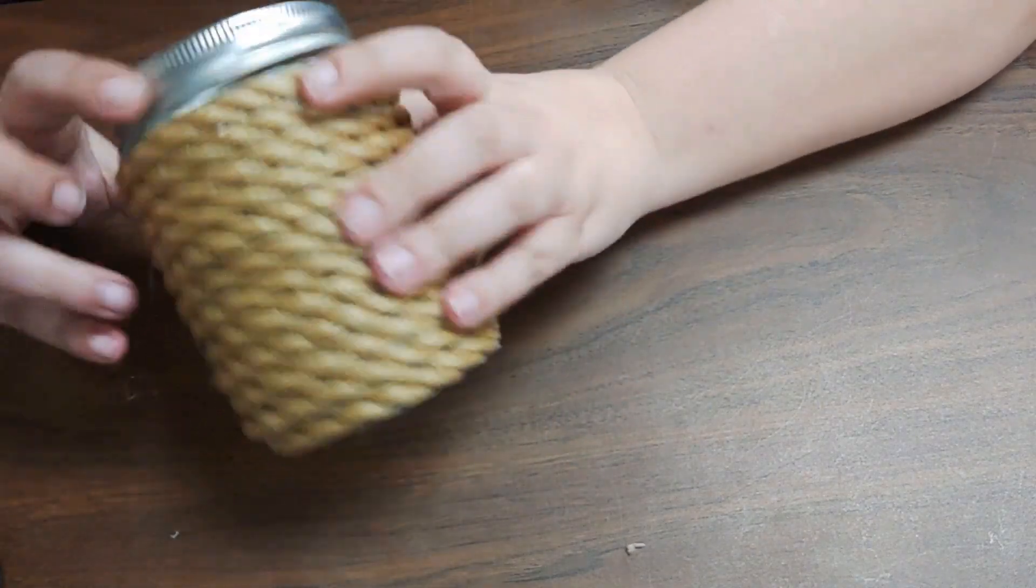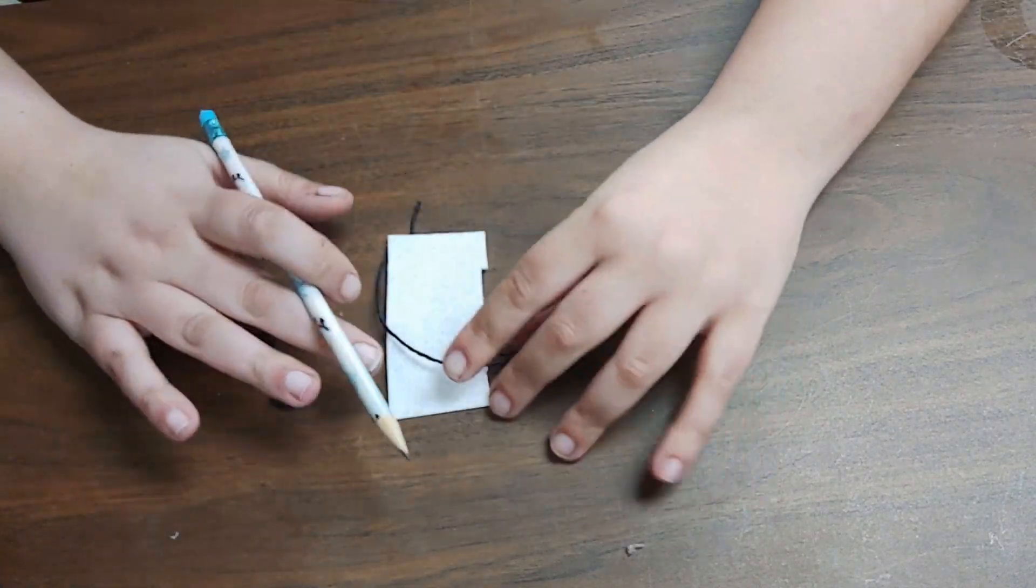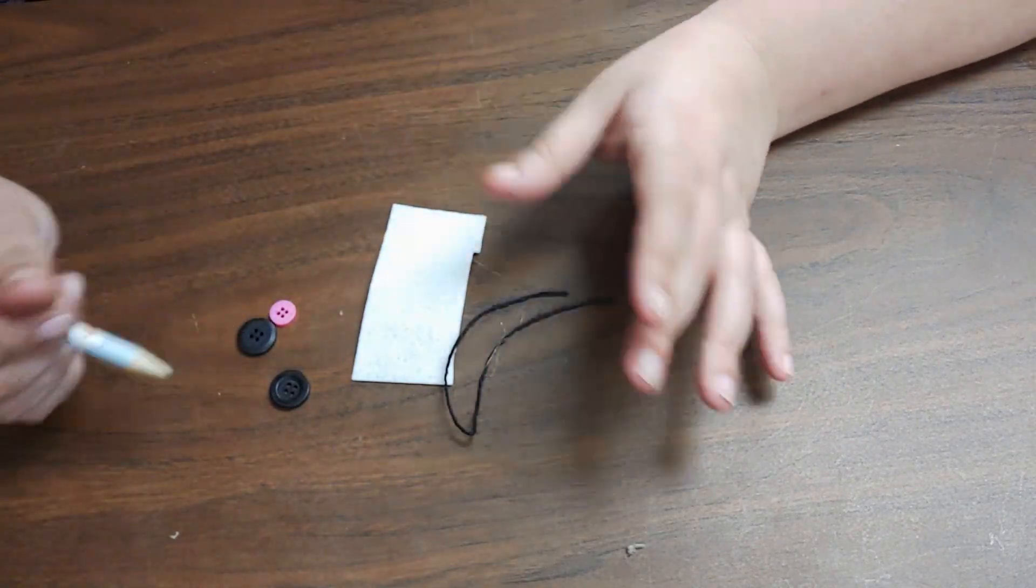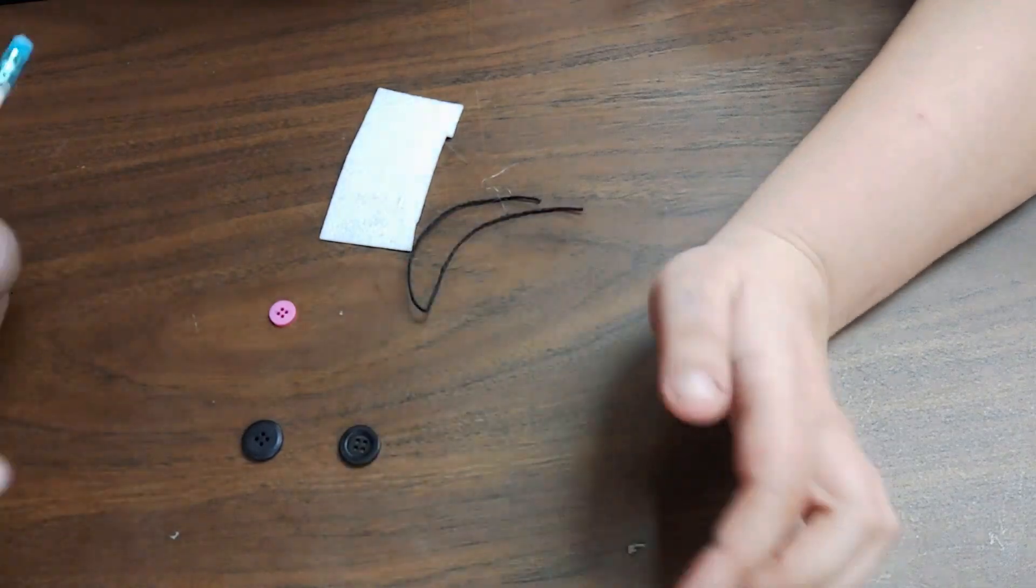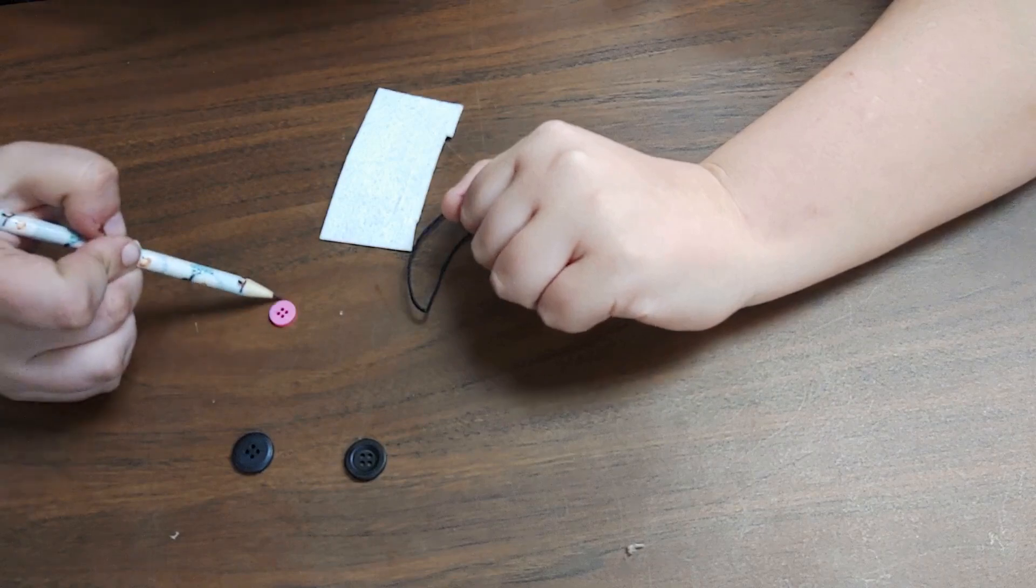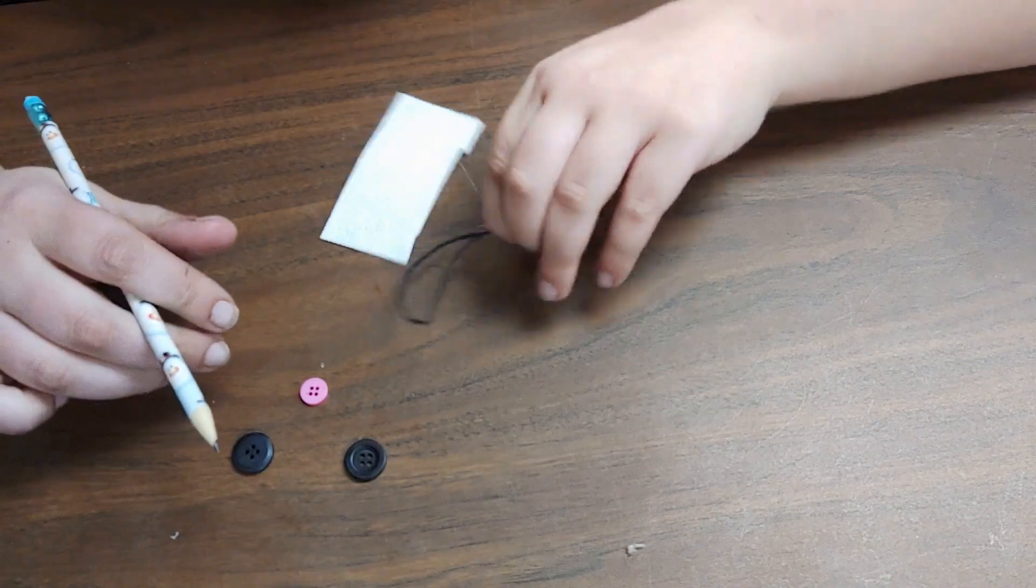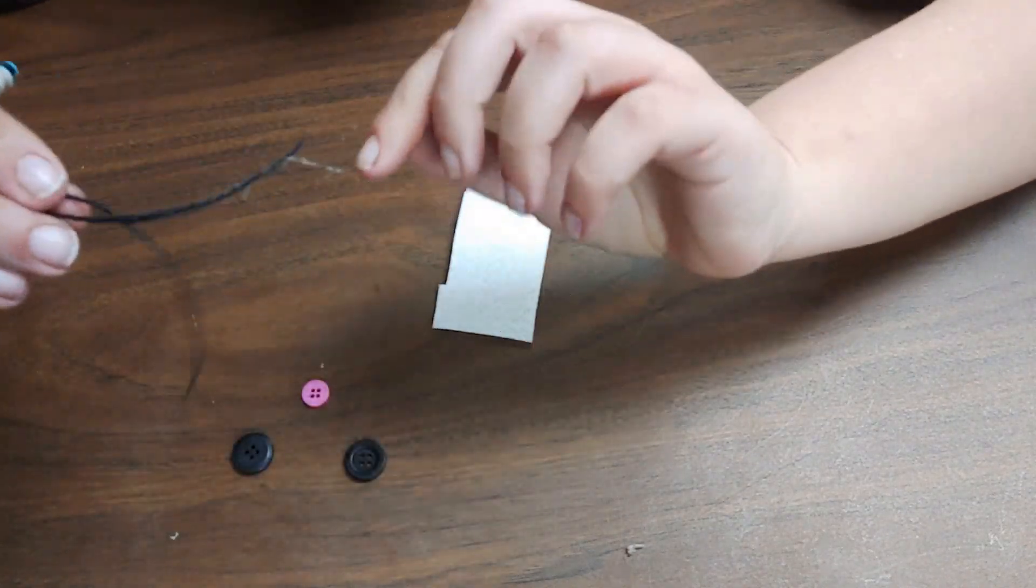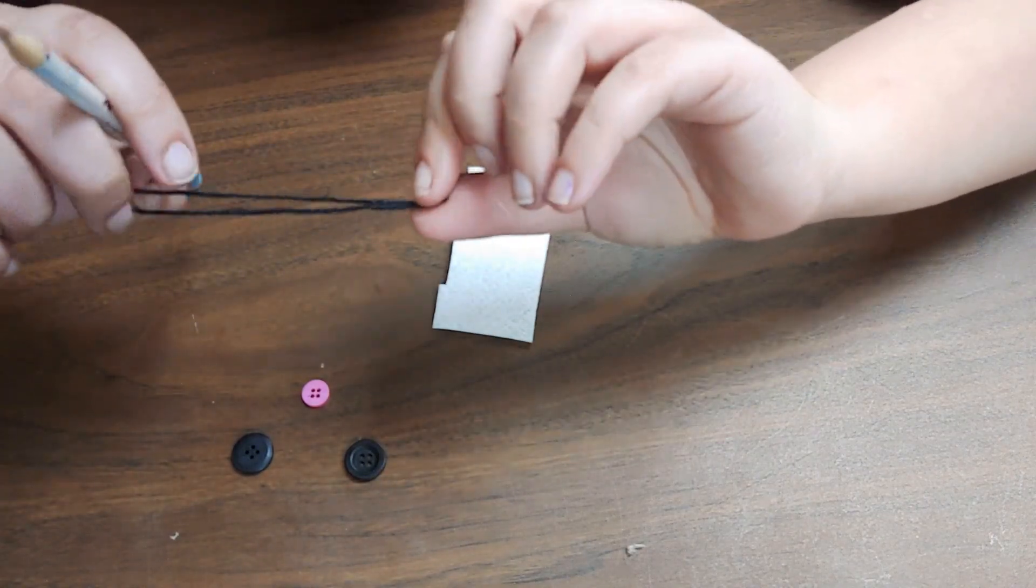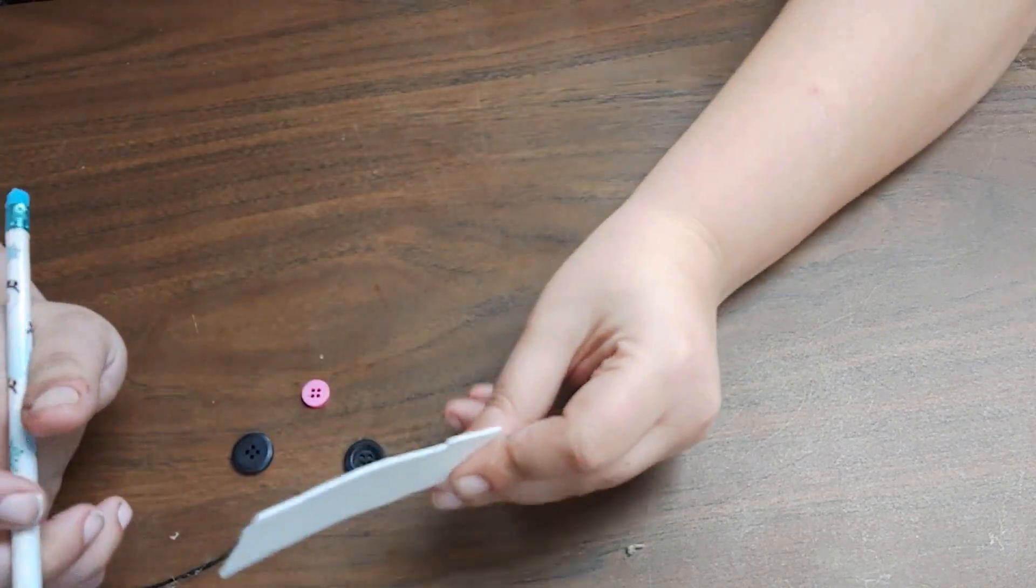So now our cat is all covered. Next up, we're going to be adding the face. So what I have here is the contents of the jar you were given and these are the elements of our face. So you'll have two black or blackish buttons—these are going to be the pupils of our eyes. You'll have a smaller pink button, this is going to be your nose. You'll have one little bit of string cord type thing—we're going to be cutting this in half to get two whiskers. And this is going to be the whites of the cat's eye.